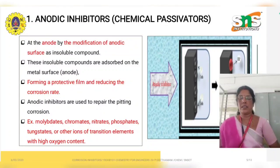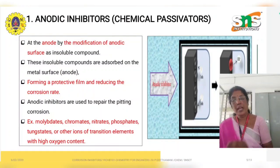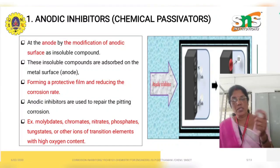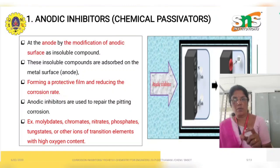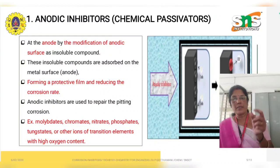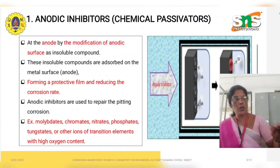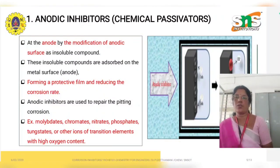Anodic inhibitors — you know very well that corrosion occurs at the anode, where oxidation occurs. Oxidation is the loss of electrons, meaning the metal loses electrons and forms metal ions. When we spray anodic inhibitors on the metal surface, the inhibitor reacts with the newly formed metal ions to form a stable compound, which is adsorbed on the metal surface to stop the corrosion. This is the technique of anodic inhibitors.